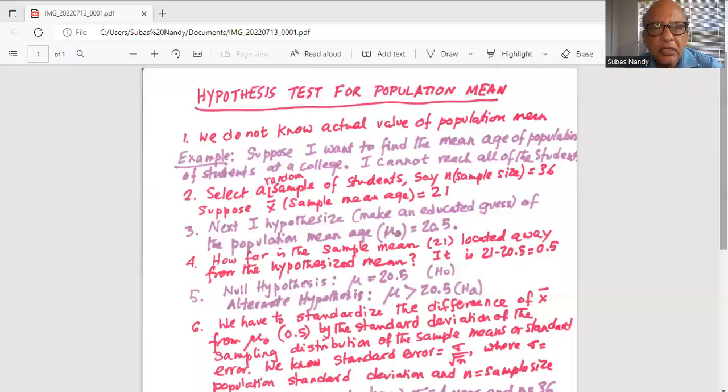Hypothesis test for population mean. The problem is we do not know the actual value of the population mean. Suppose I want to find a mean age of population of students at a college. I cannot reach all of the students.